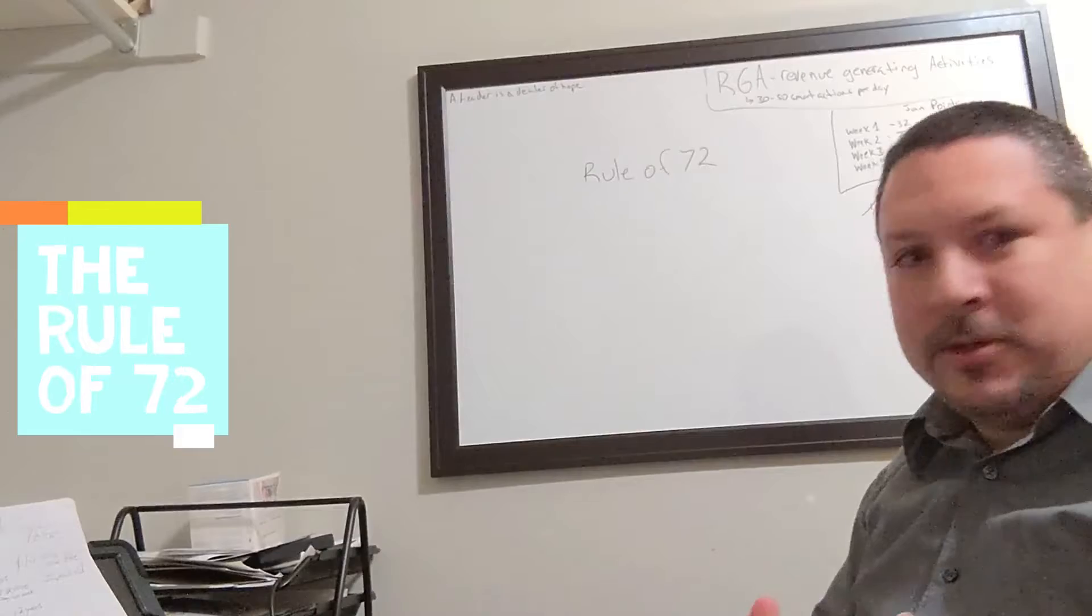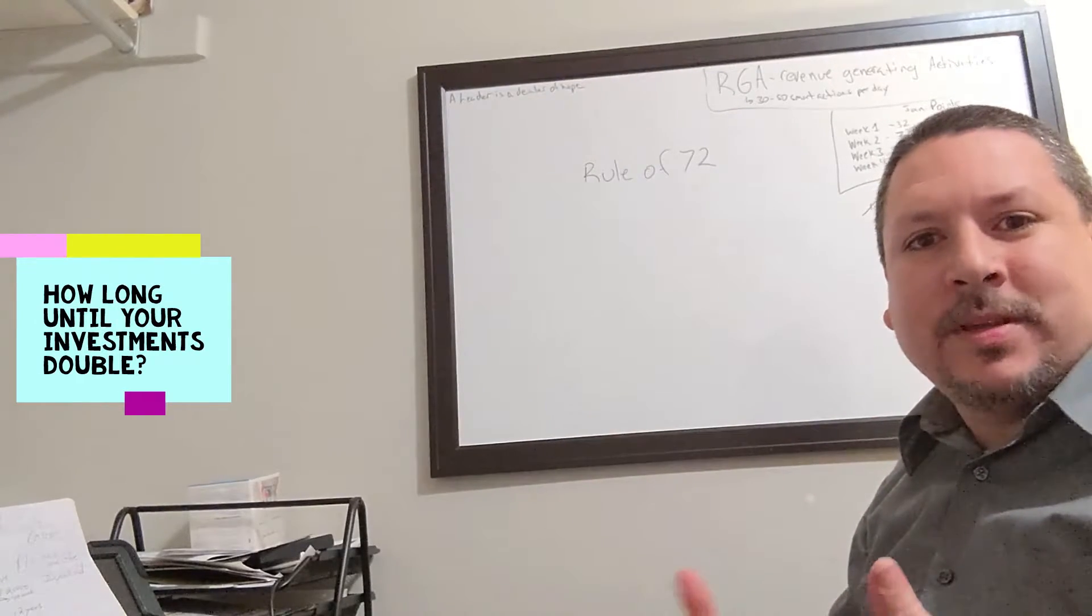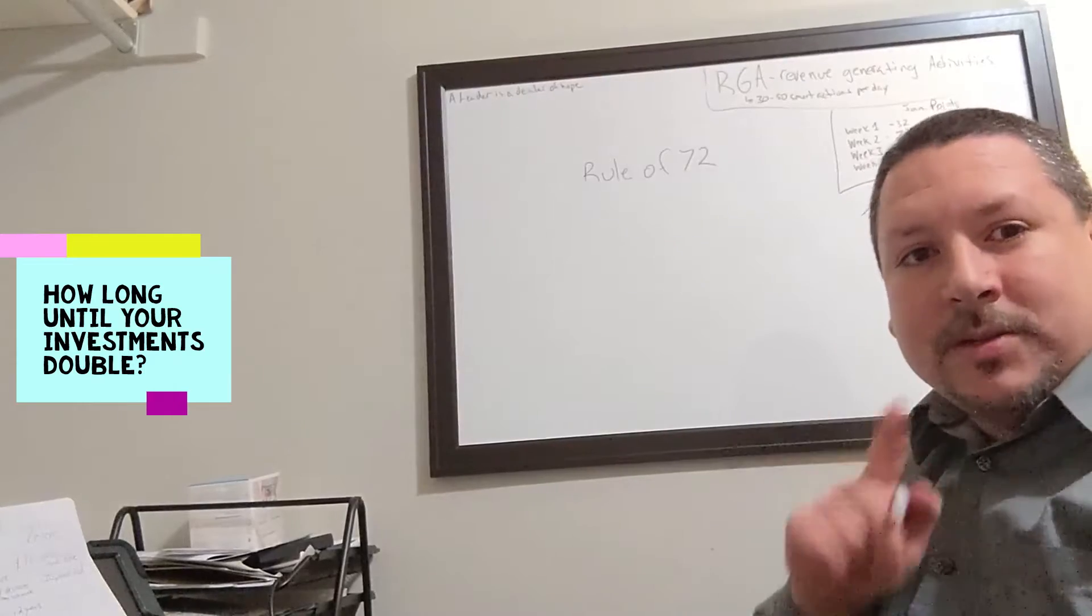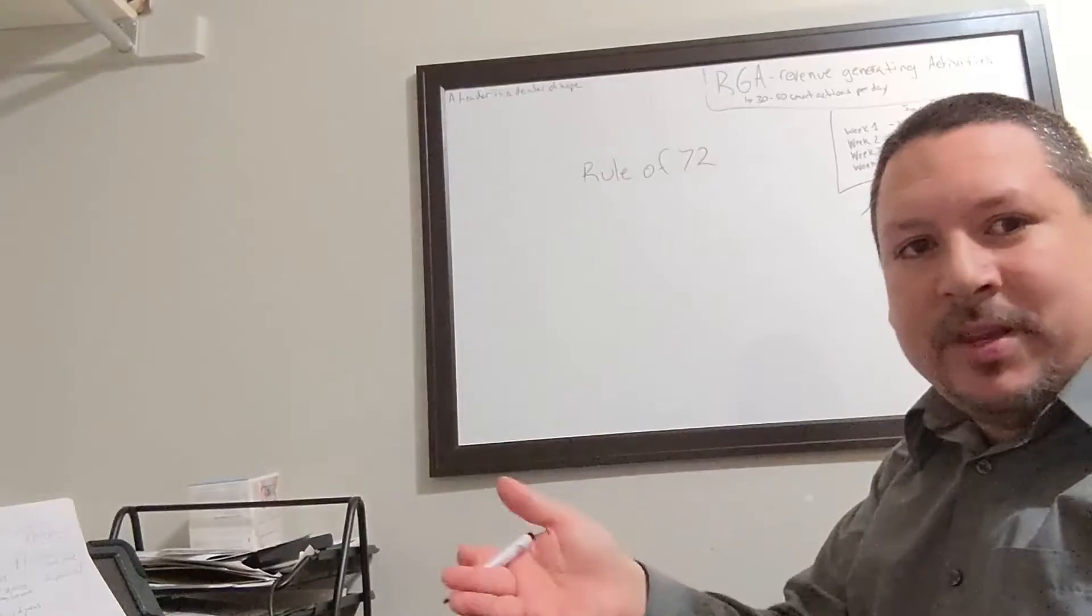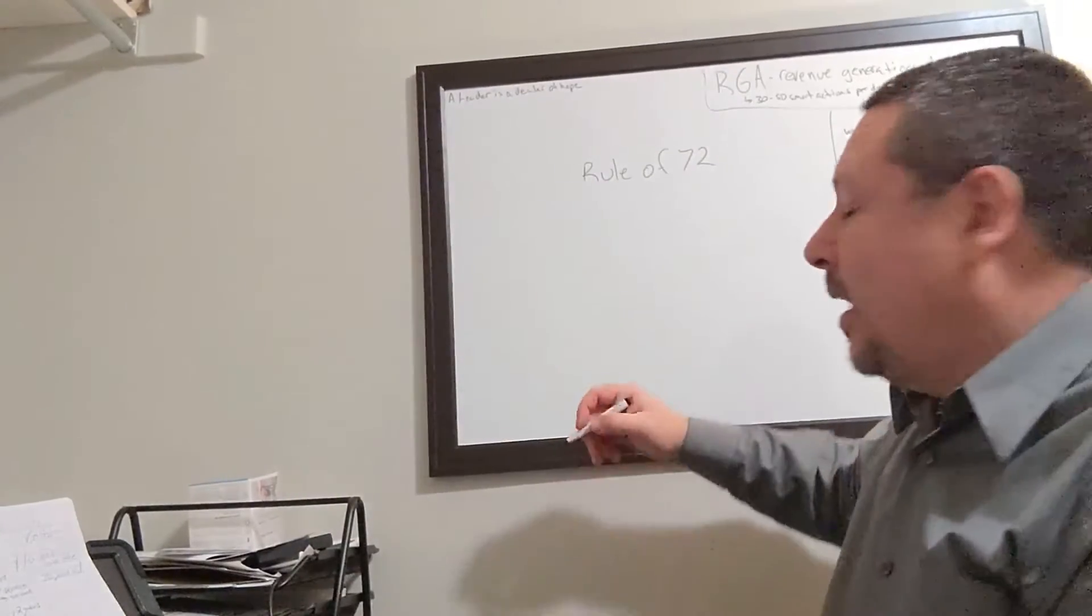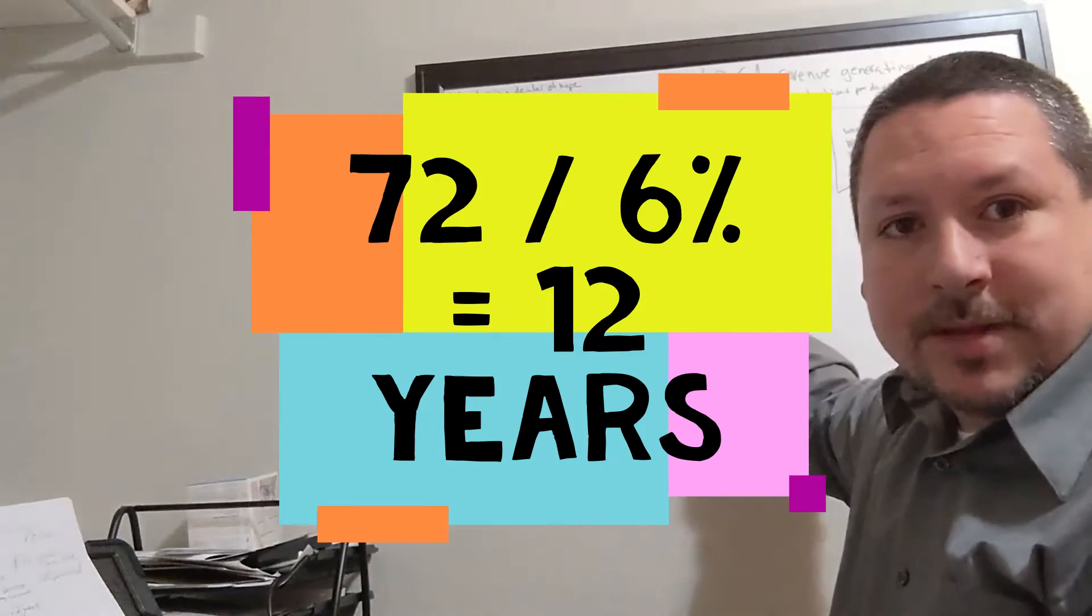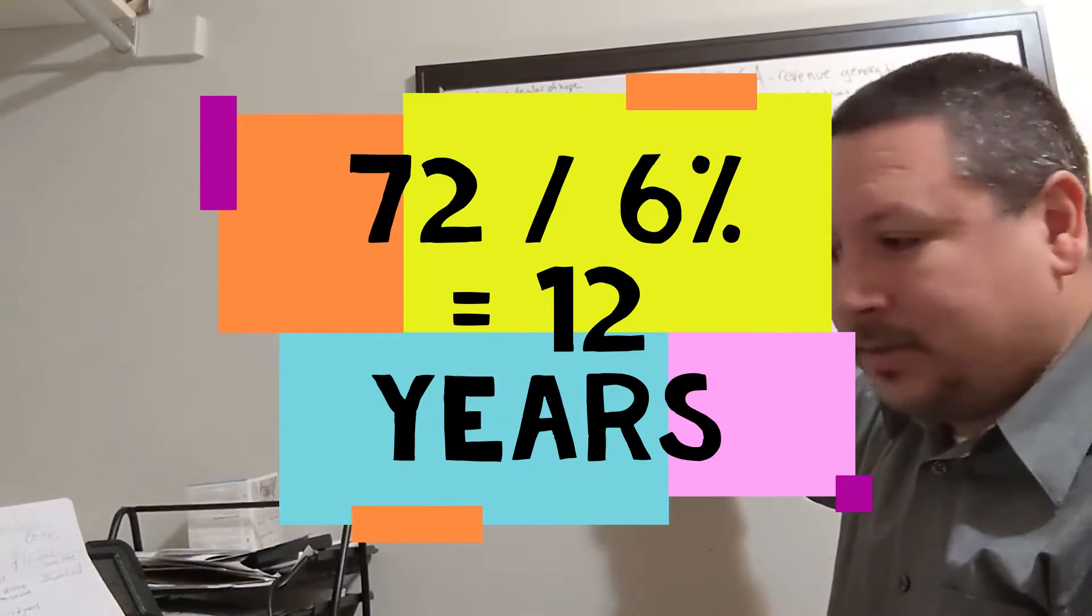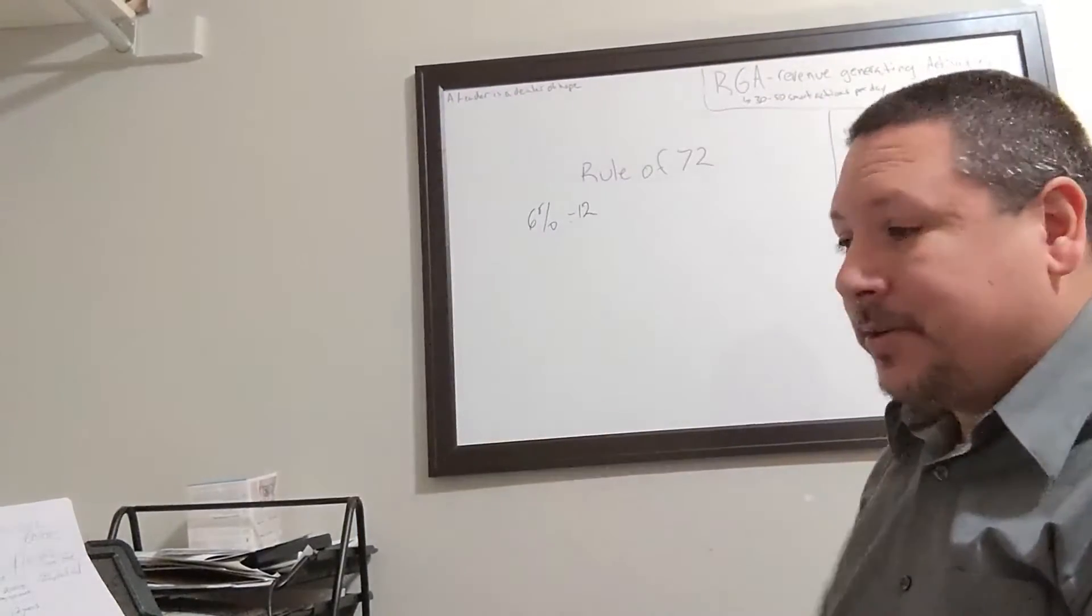This is really important when you look at your investments and ask how long would it take my investments to double. Here's what you need to know: you take 72 and divide it by the interest rate. So let's say you're getting 6% interest rate. 72 divided by 6 is 12 years.